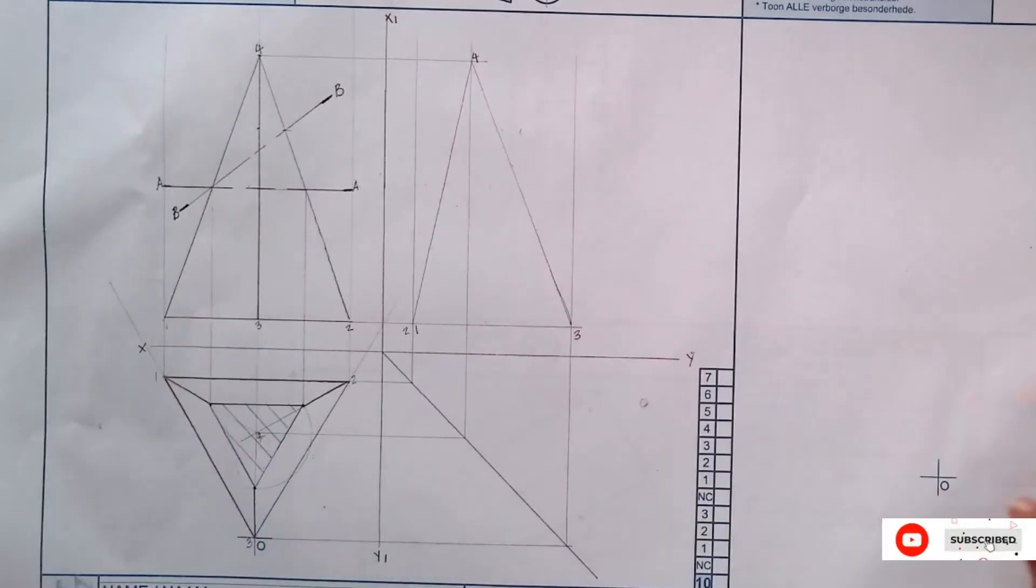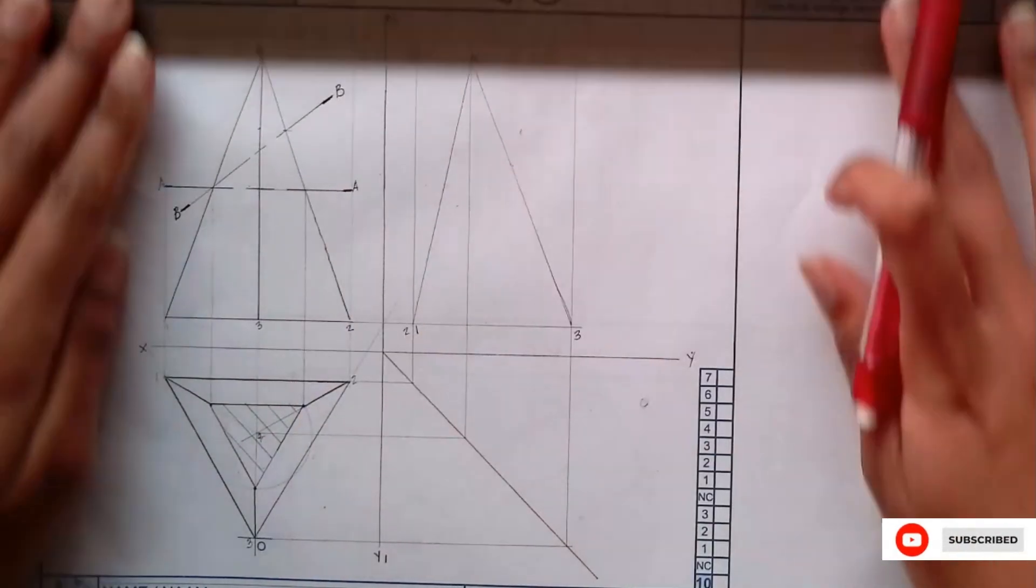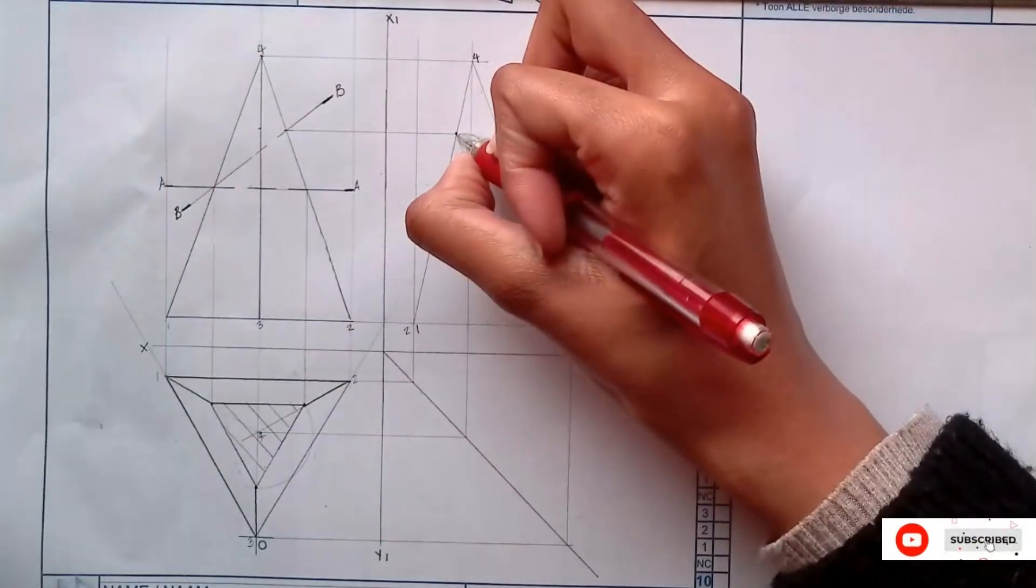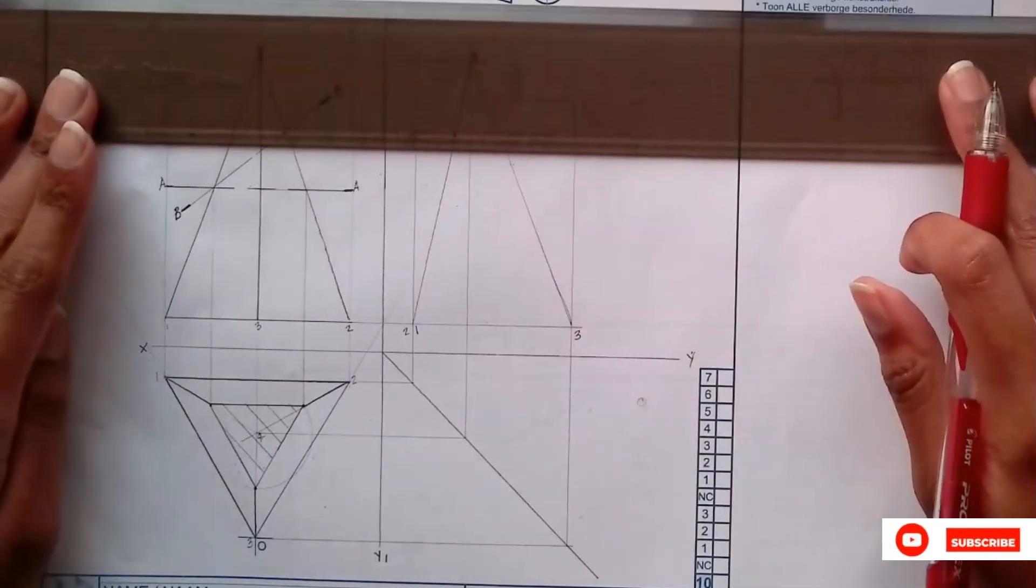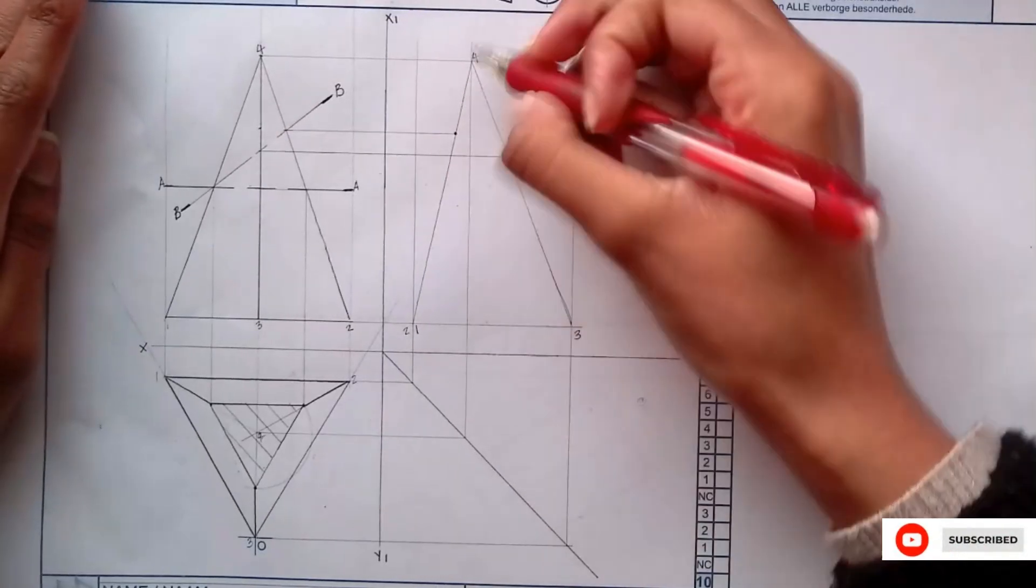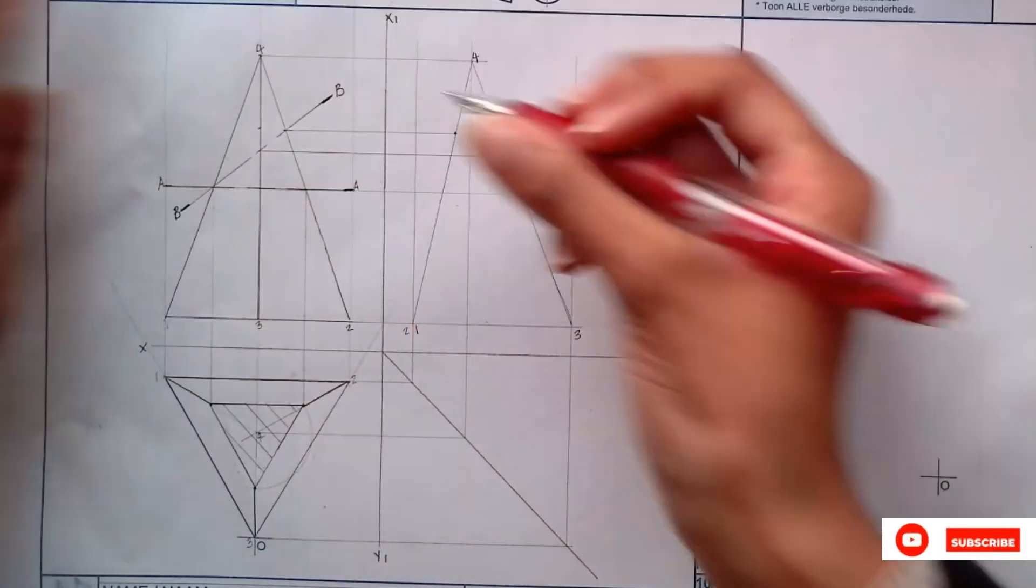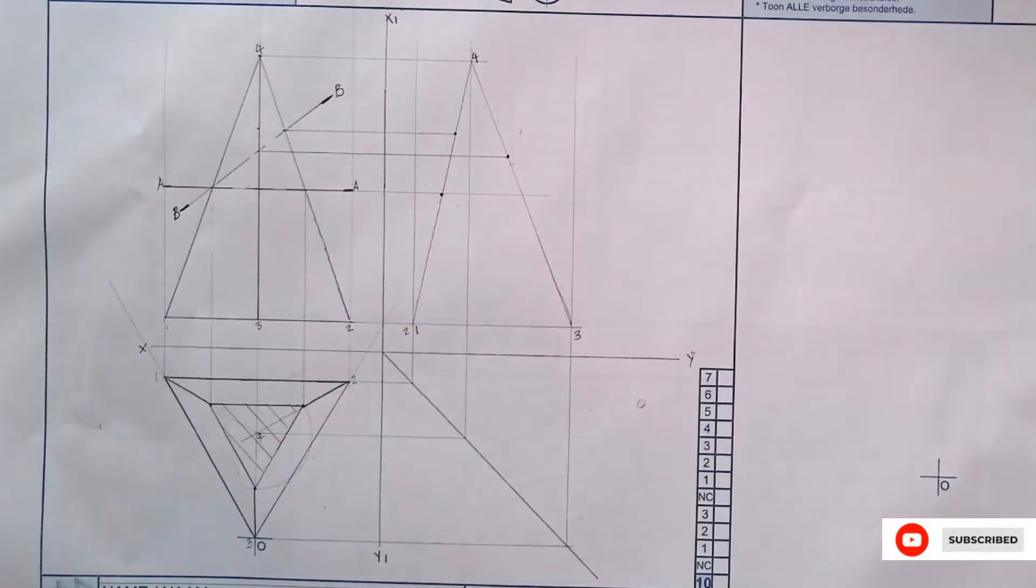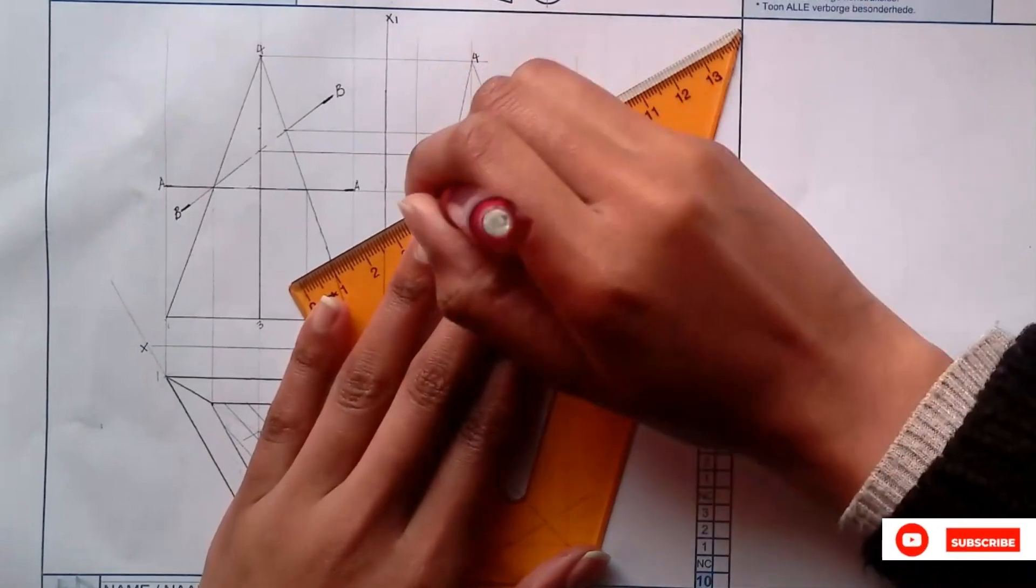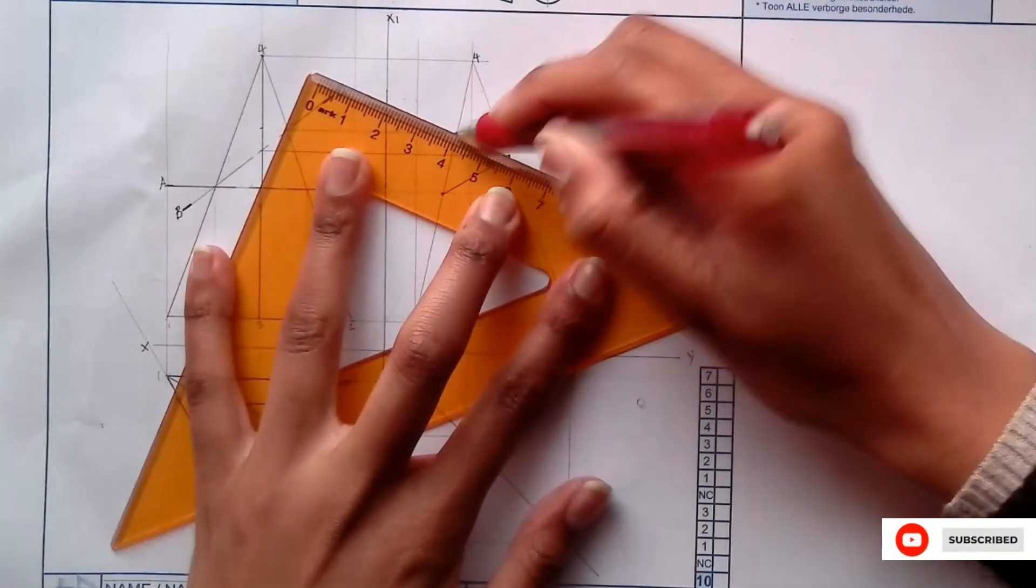For this view we use cutting plane BB. BB cuts two and four here and two is in this line, so you're going to take it to that line. Then you have a point for two on this line, then it cuts three there. Line three and four cut there, then lastly it cuts one here. We will stop there and then we will immediately join the points together to form a sectioned view.